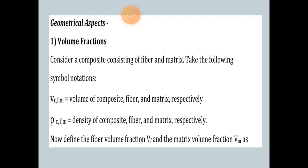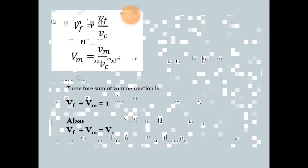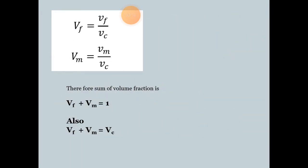Define the fiber volume fraction V_F and matrix volume fraction V_M as: V_F equals small v_F divided by V_C, and V_M equals small v_M divided by V_C. Therefore, the sum of volume fractions is V_F plus V_M equal to 1, and v_F plus v_M equals V_C.